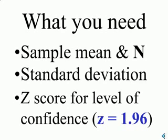Usually we use the .05 level of confidence — in other words, we're 95% confident that the value lies within the margin of error. The z-score that corresponds for a two-tail 95% confidence interval is 1.96. We could also use a 90%, 99%, or 99.9% confidence interval, but usually the 95% confidence interval is used, so usually the z-score you're going to be using is 1.96.